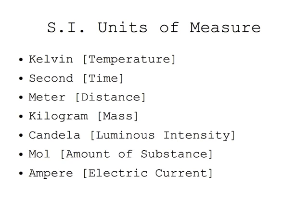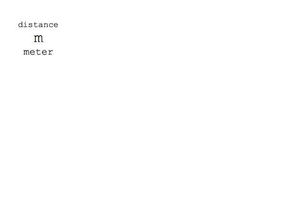With this as an introduction, let's go through some common units of measurement. To measure distance, we commonly use multiples of the meter, abbreviated by a lowercase m. To measure mass, we commonly use the kilogram, abbreviated by a lowercase kg. To measure time, we commonly use multiples of the second, abbreviated by a lowercase s.